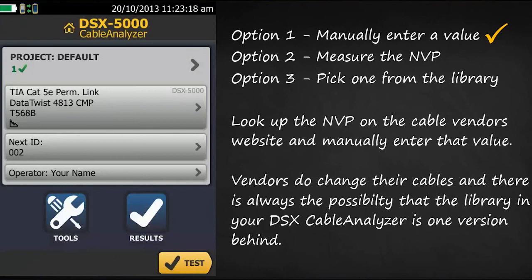So there are three options to setting the MVP. Looking up the MVP on the cable vendor's website and manually entering that value is by far the best method. Vendors do change their cables, and there is always the possibility that the library in your DSX is one version behind. Also, if an audit of your results is being conducted, chances are they will use the value from the datasheet, not what you measured.